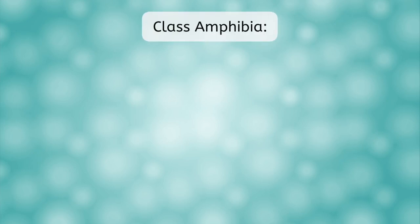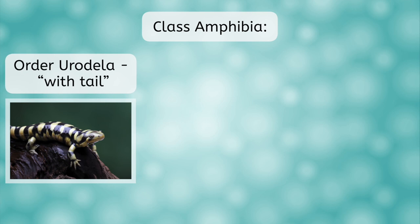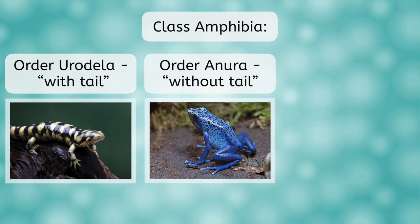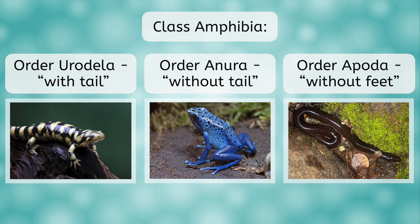For the rest of this lesson, we will be focusing on the three main orders that make up class amphibia. Order Urodella, which translates to 'with tail,' is made up of salamanders and newts. Order Anura, which translates to 'without tail,' is made up of frogs and toads. And finally, order Apoda, which translates to 'without feet,' and is made up of caecilians.